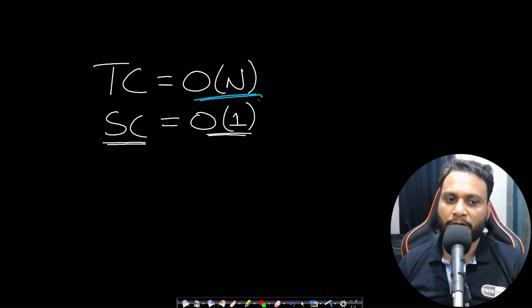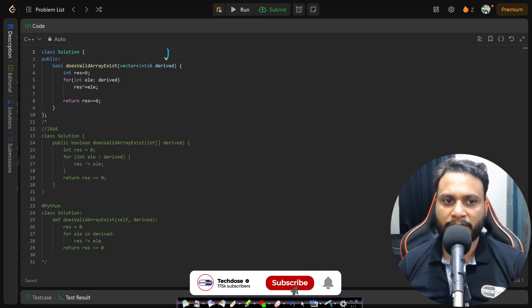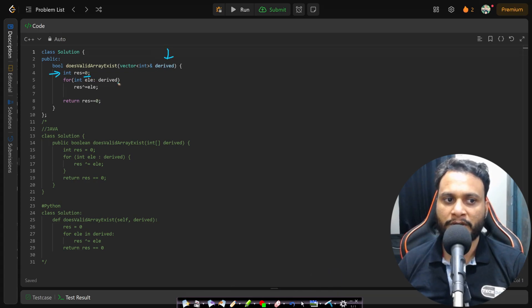So the time complexity will be O(n) and space complexity will be O(1). Let's now look at the code. In this problem we are given the derived array, and as I said, I will be taking a result value equals to 0 and iterate over all the derived values.